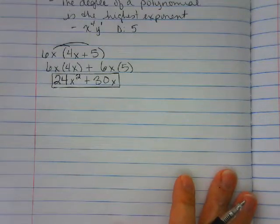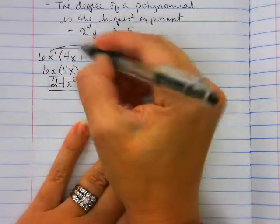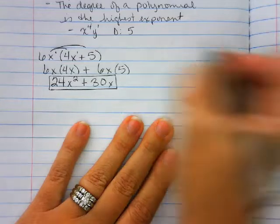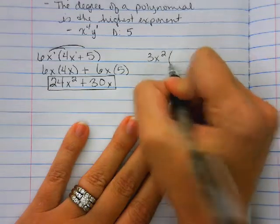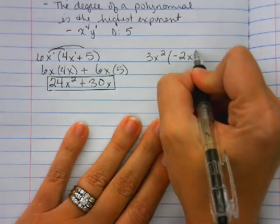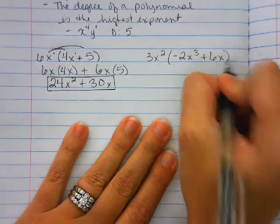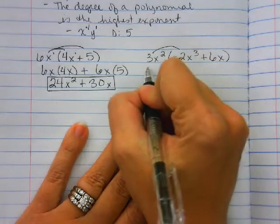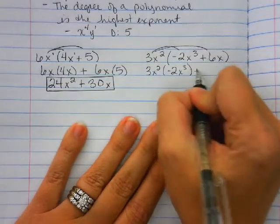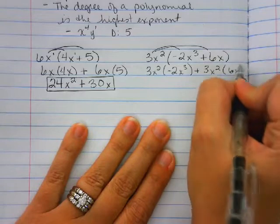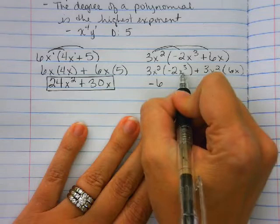Sometimes we do have exponents outside besides just our ones. So maybe we have 3x squared times negative 2x to the third plus 6x. Still the same concept: 3x squared times negative 2x to the third, plus 3x squared times 6x. So 3 times negative 2 is negative 6, x squared times x to the third.